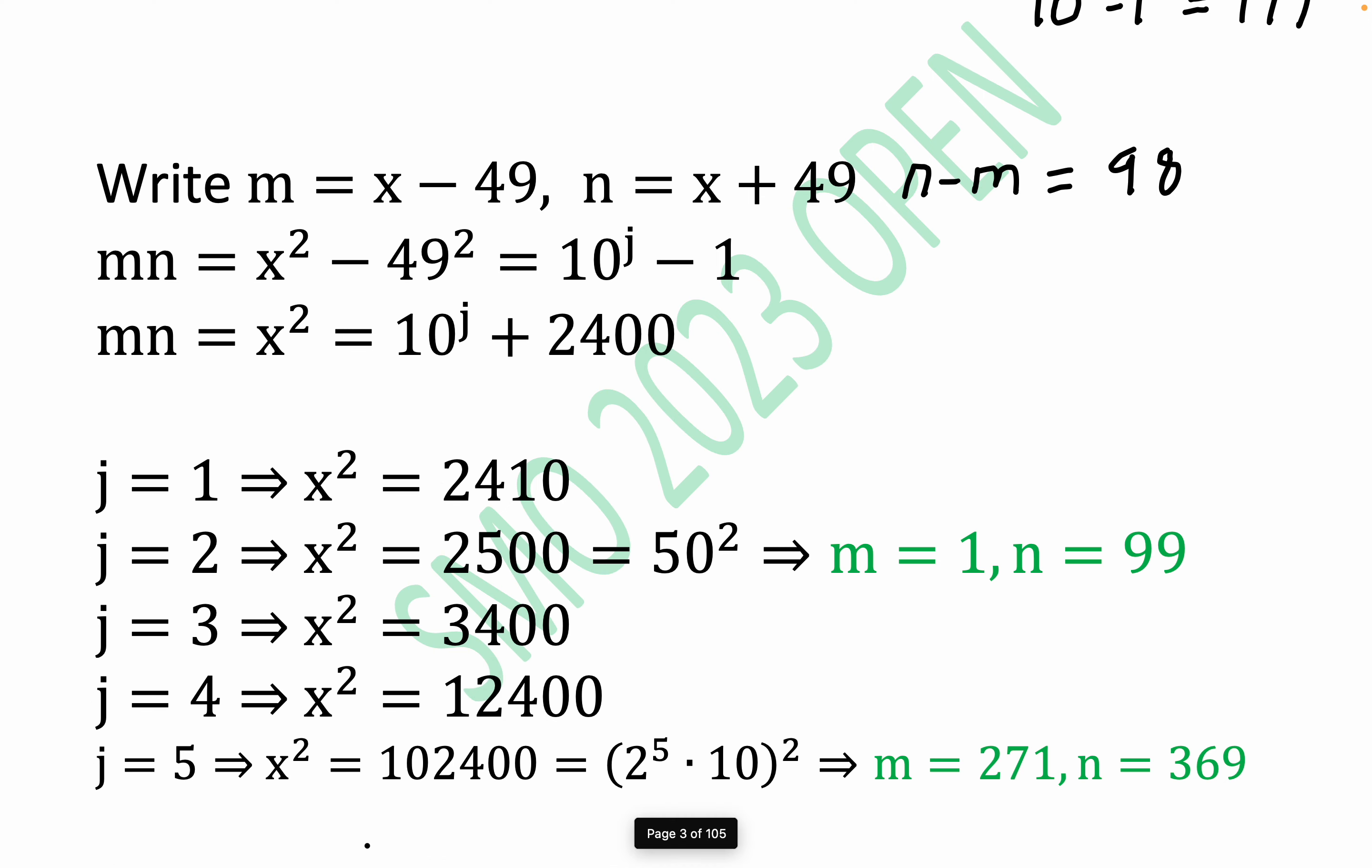But you get down here, and if you do the prime factorization, you'll notice that this number, 102,400, turns out to be a perfect square owing to this prime factorization. Notice that 2 to the fifth squared is 2 to the tenth, which is 1,024, and 10 squared is 100.